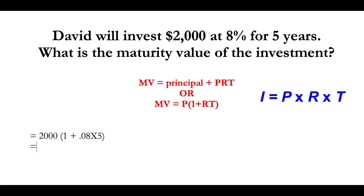In your calculator: 0.08 multiplied by 5 equals 0.4, plus 1 equals 1.4, multiplied by 2,000 equals 2,800. So the answer to this question — the maturity value is $2,800.